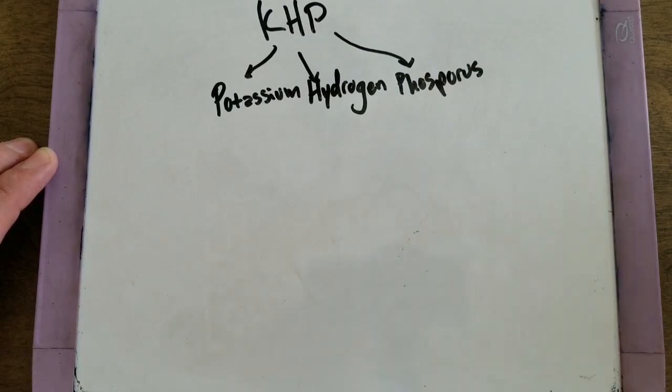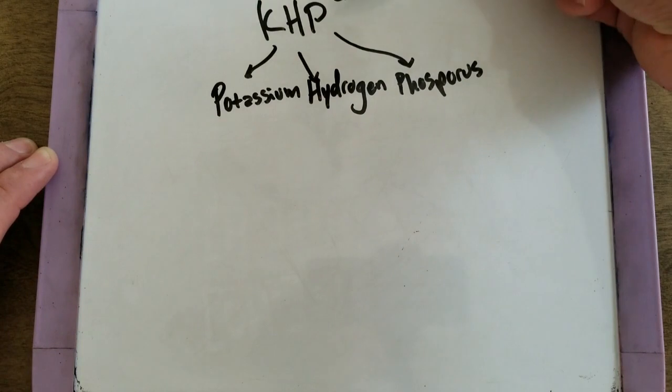But the P in KHP does not stand for phosphorus, but phthalate.